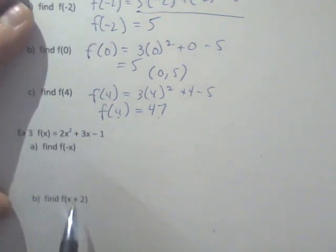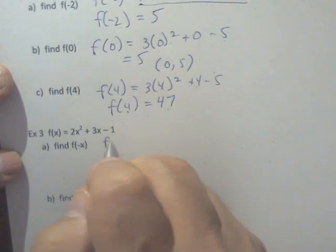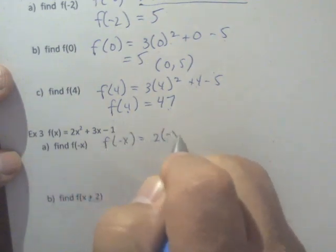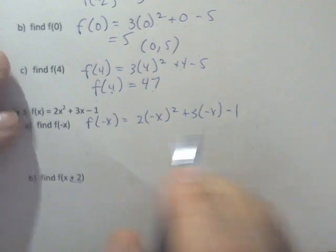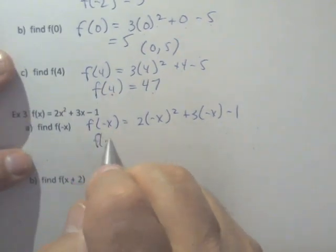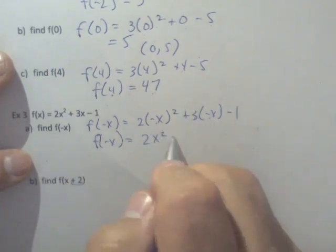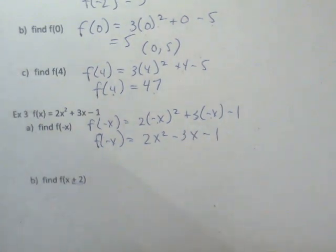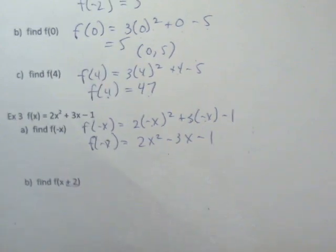We can also do x's and expressions into the function as well. If I wanted to do f of negative x, I just replace all x's with negative x and then simplify. If I square negative x, it just stays positive. 3 times negative x is negative 3x and then minus 1. You can get expressions. We obviously cannot plot these on a graph, but you can still get an input and an output. I'm not solving, I'm not factoring. I'm stopping right there. I am substituting and simplifying.